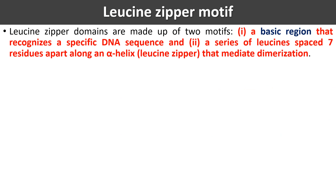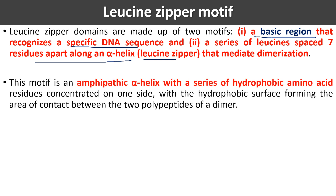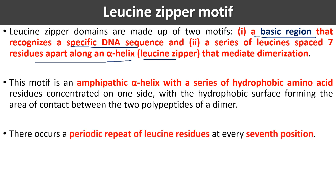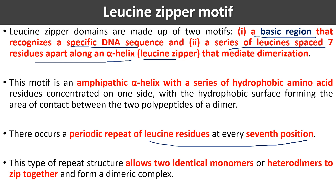Leucine zipper domains are made up of two different types of regions: a basic region that recognizes the specific portion of DNA, and a series of leucine amino acids spaced seven residues apart along an alpha helix — that is called the leucine zipper, which mediates dimerization. This motif is an amphipathic alpha helix with hydrophobic amino acid residues concentrated on one side. There occurs a periodic repeat of leucine residues at every seventh position.